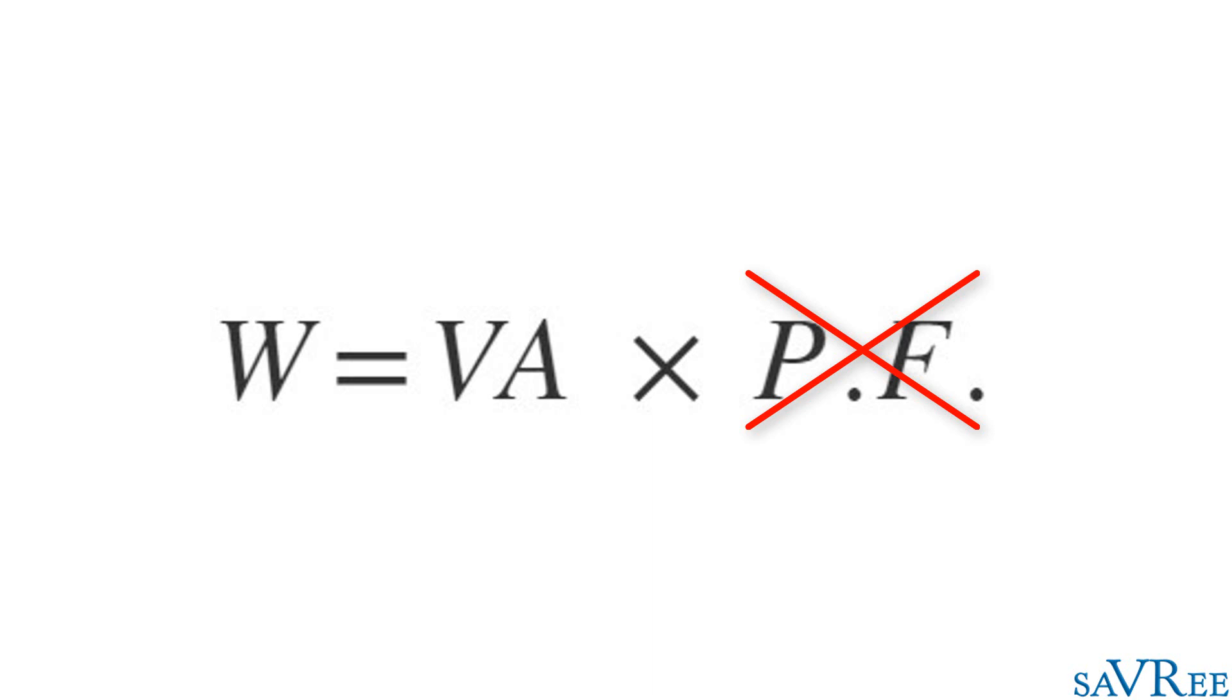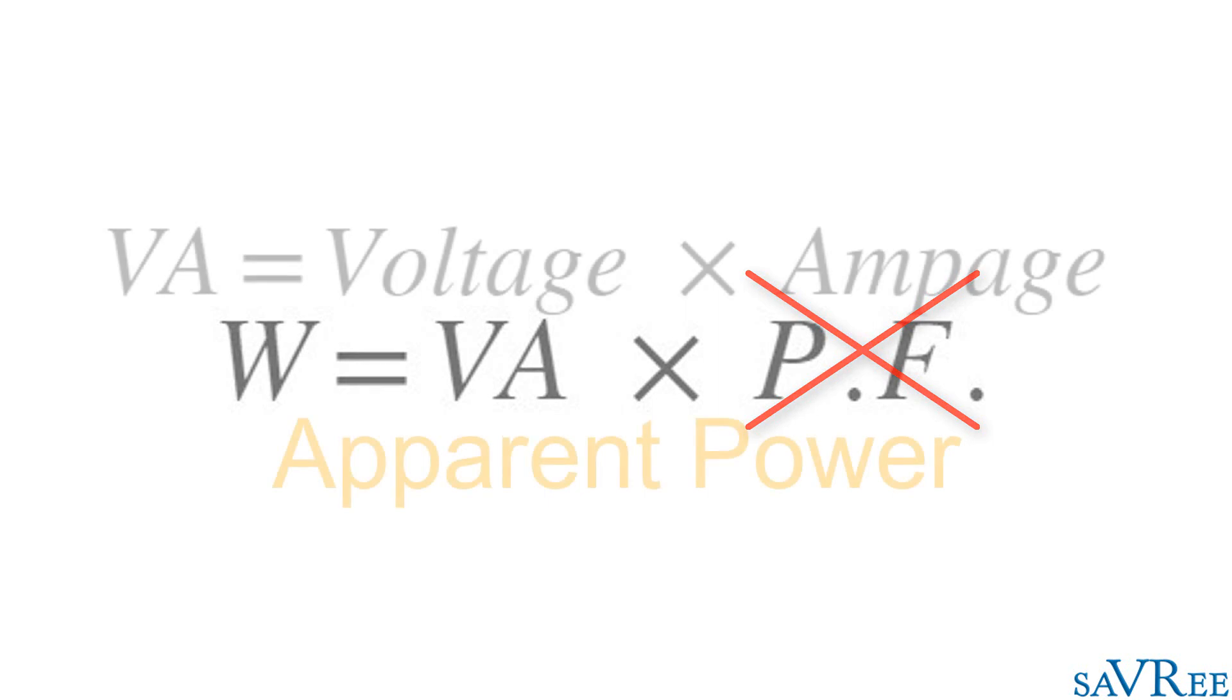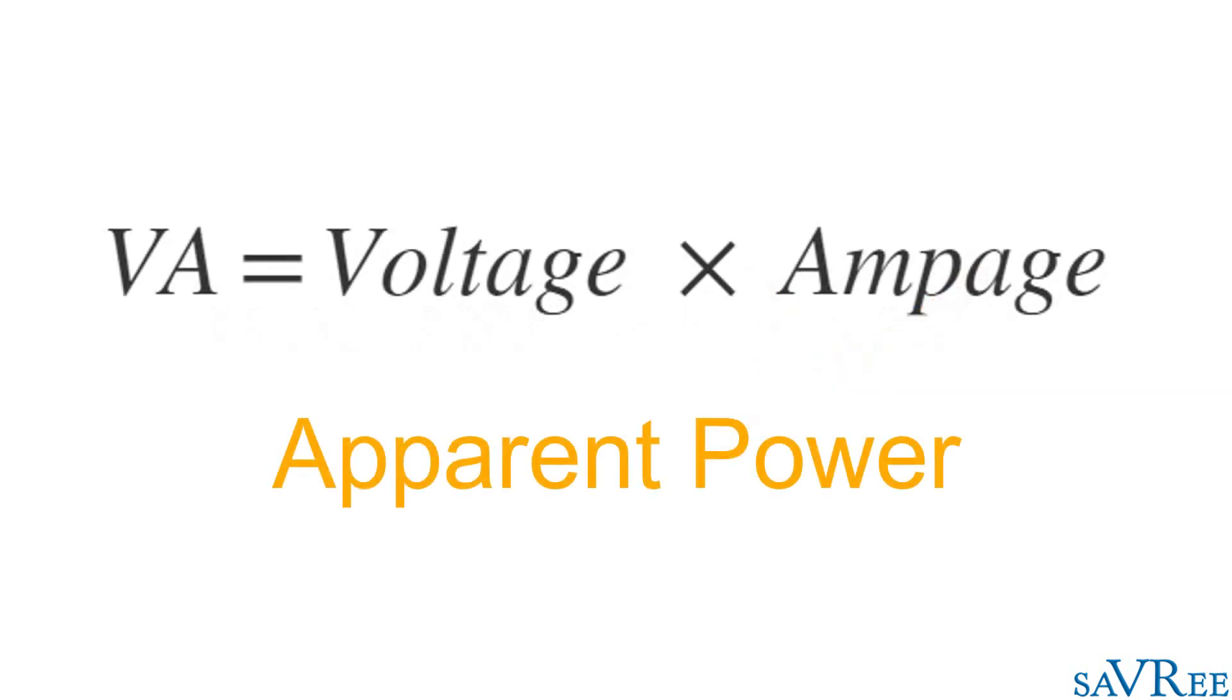In order to get around this problem, manufacturers will rate equipment such as transformers and generators in voltage ampere. Voltage ampere is a measurement of the apparent power, not the real power.